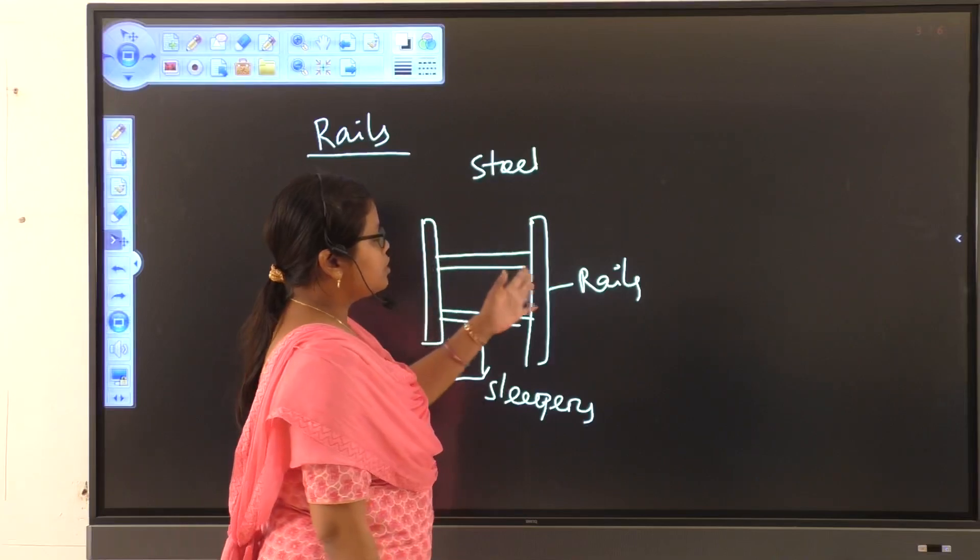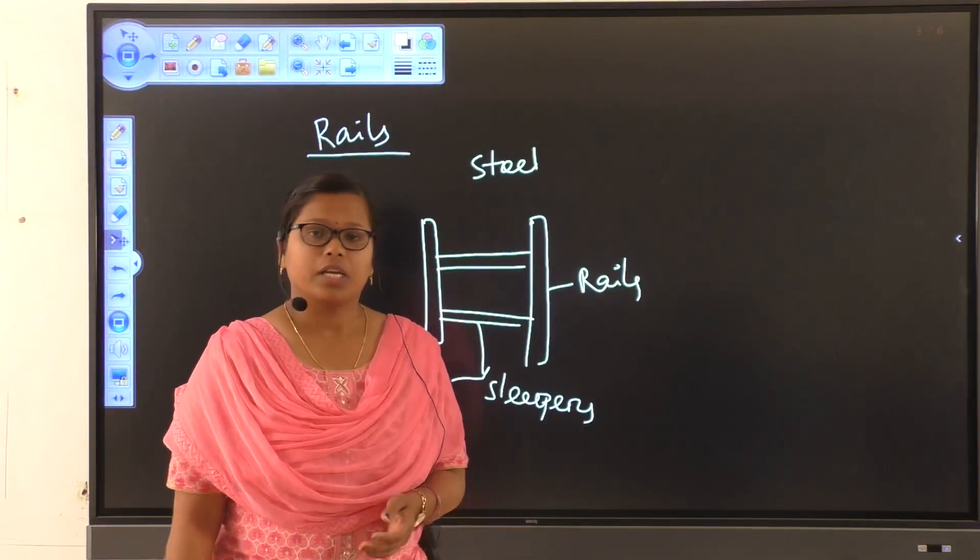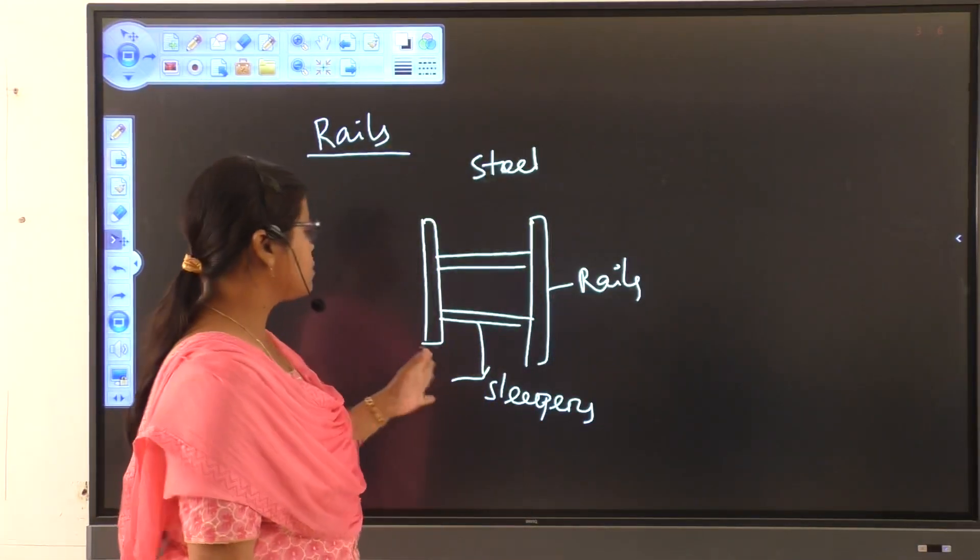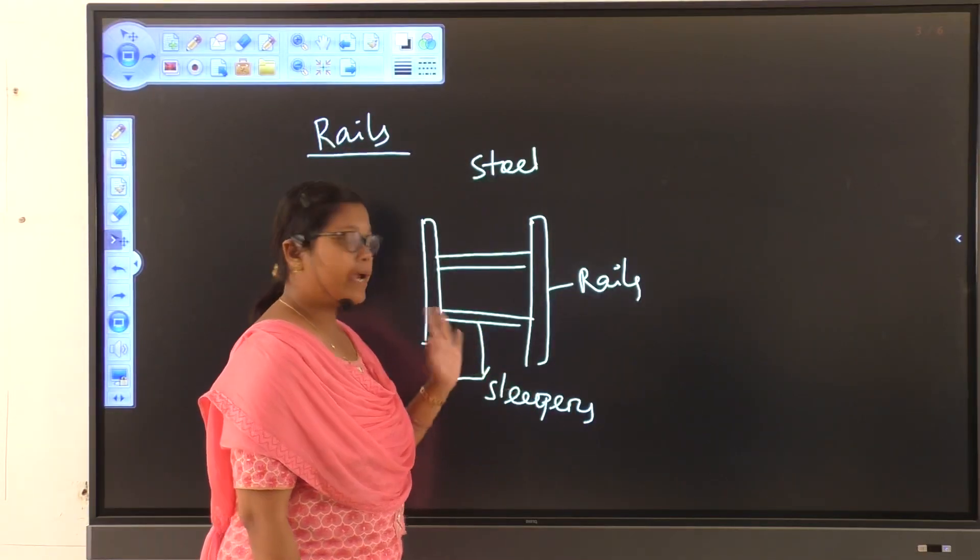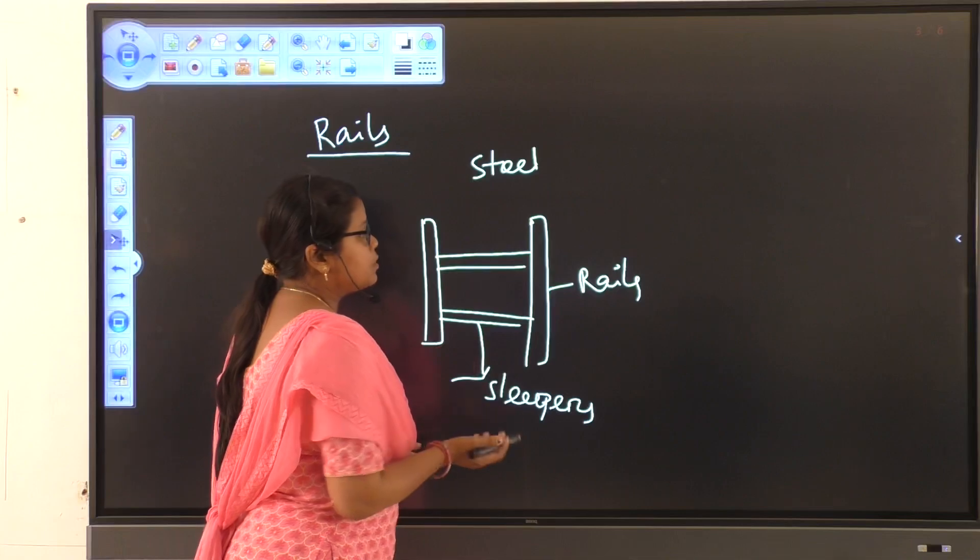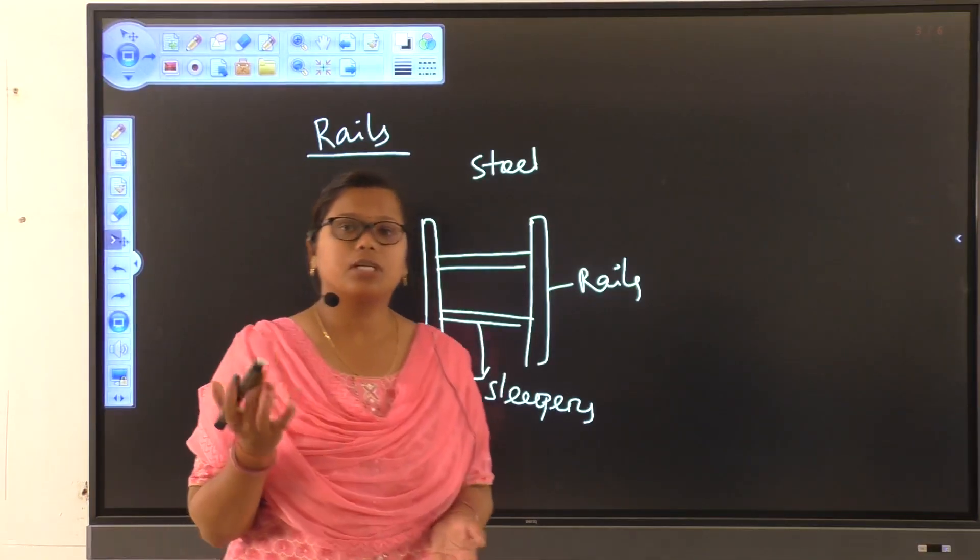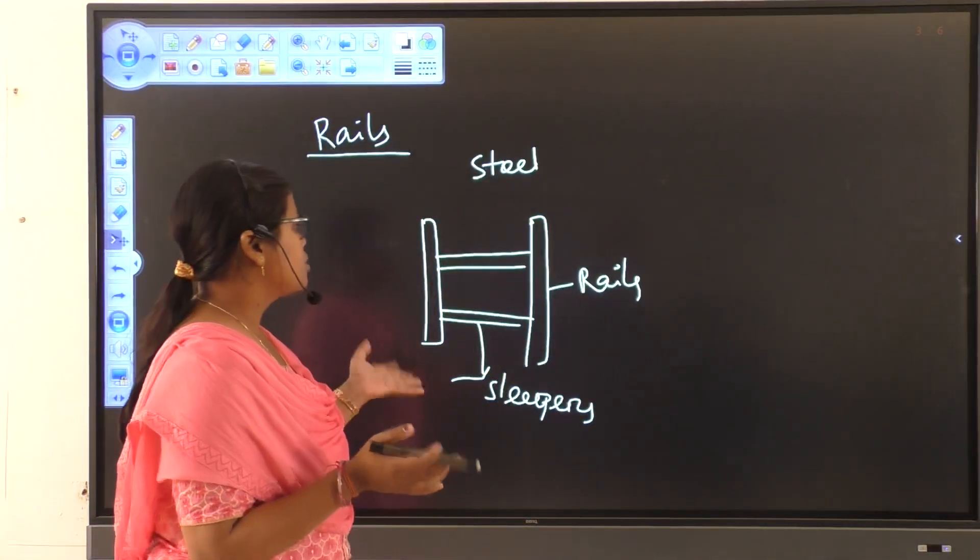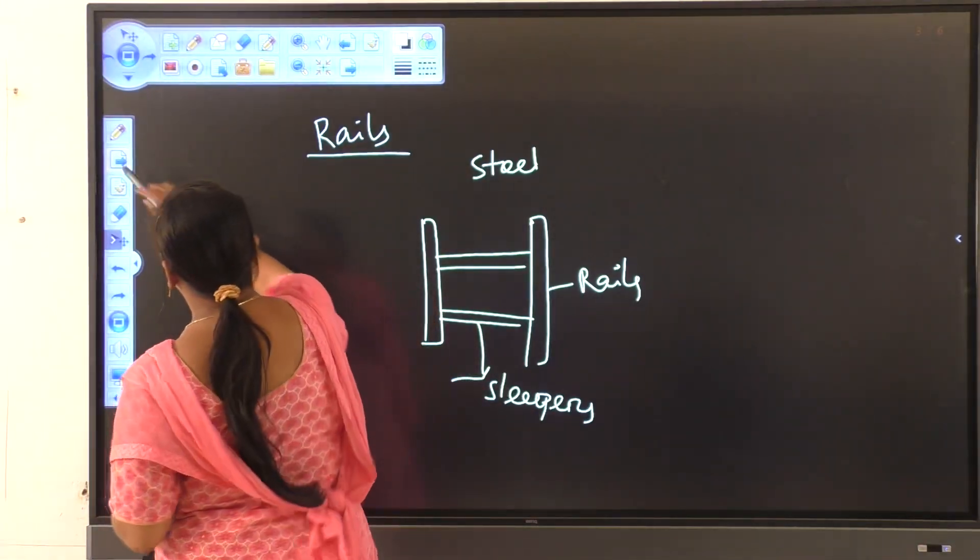Then, what are the uses of rails? It holds the sleepers in position. And it transfers the load from the trains to the sub-grade uniformly.